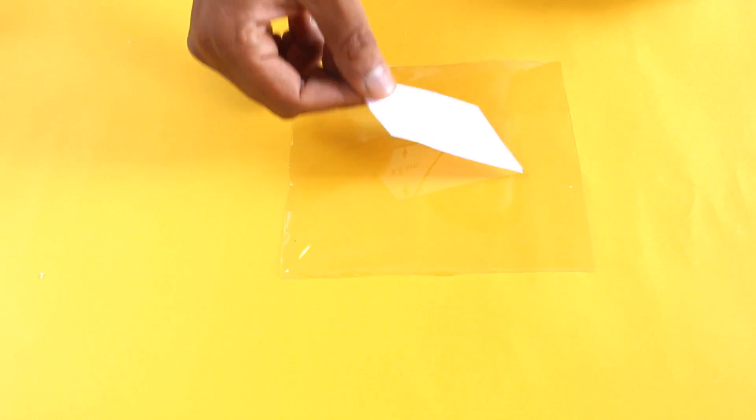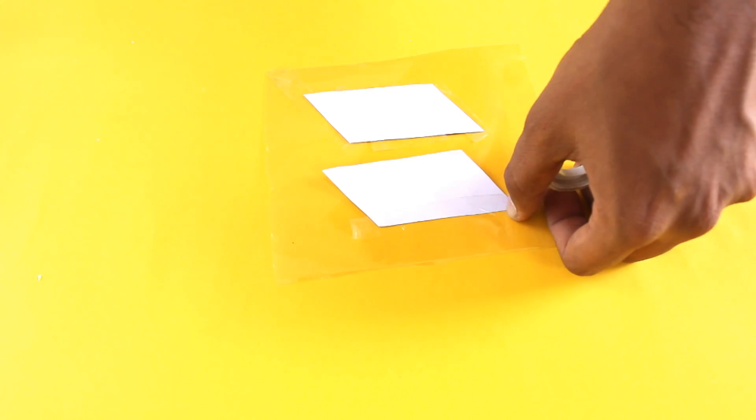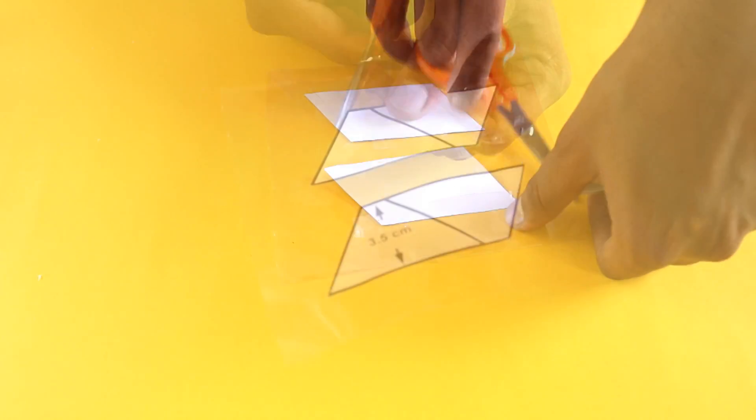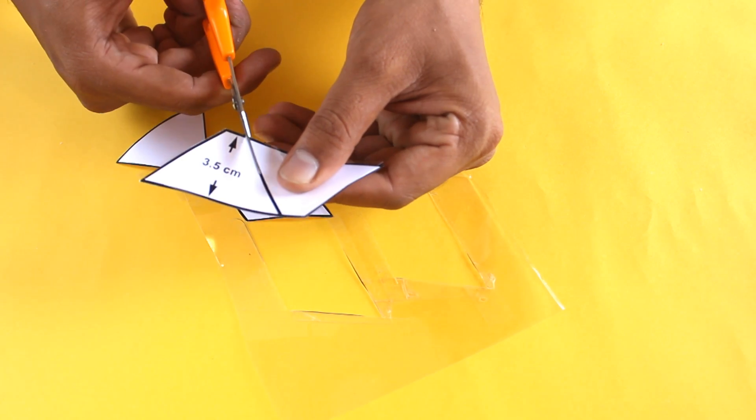In case of a clear plastic sheet, do the same. Paste the template, cut it, and stick them in the shape of a pyramid with tape.